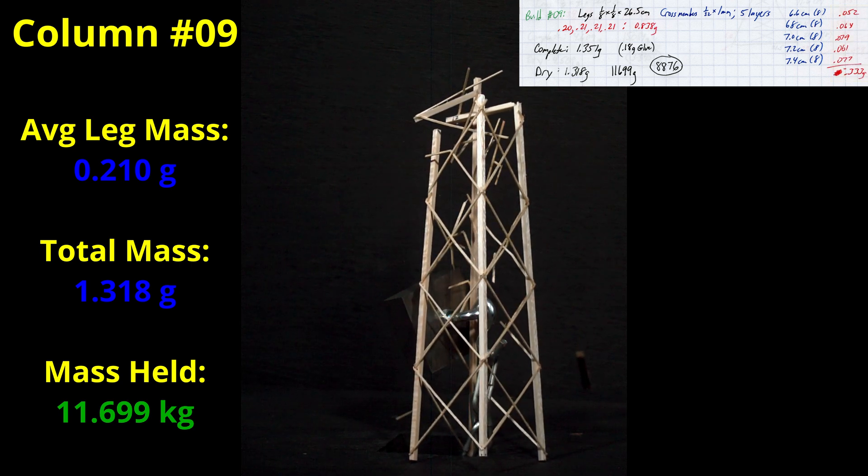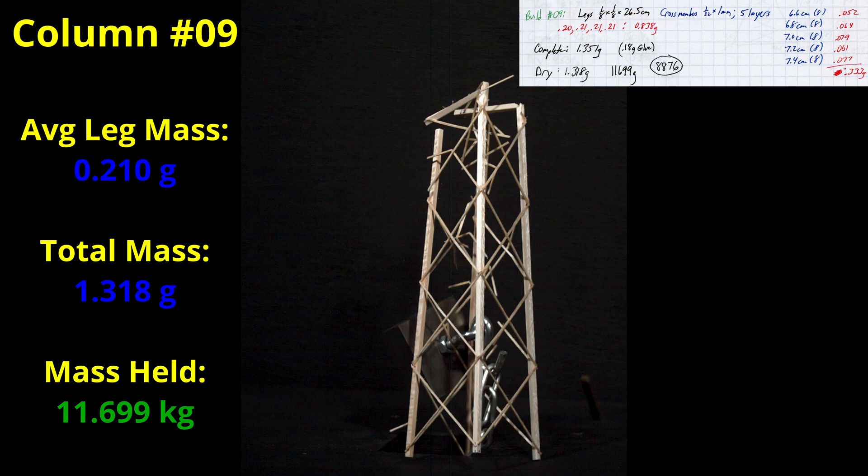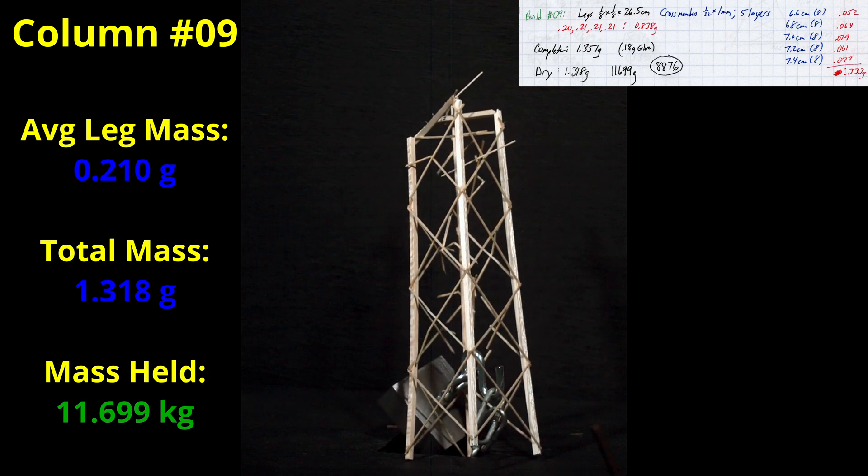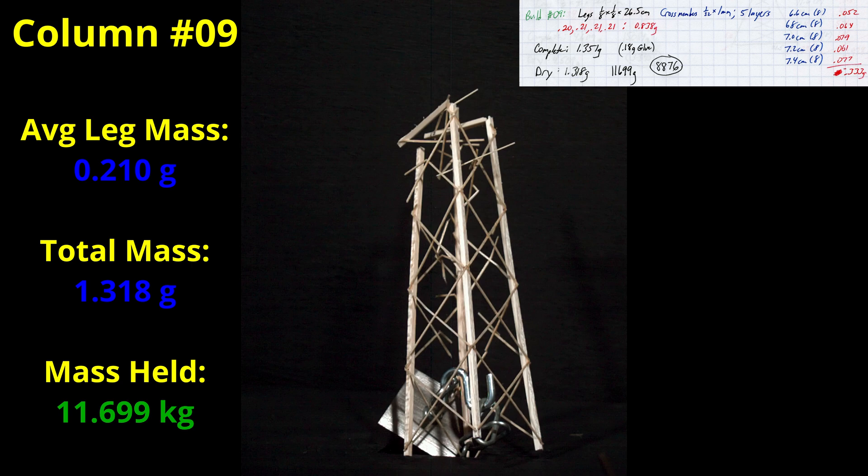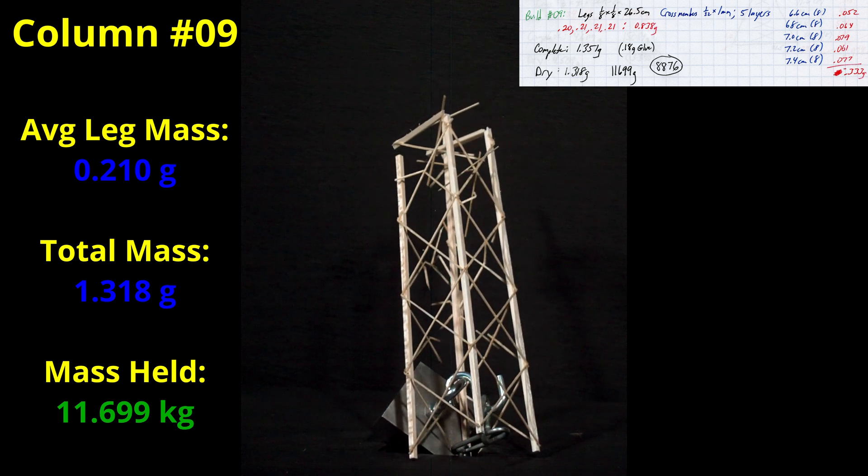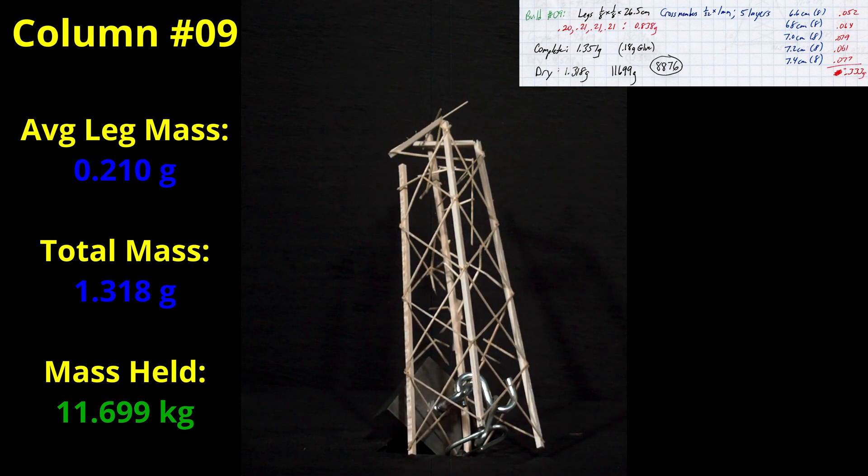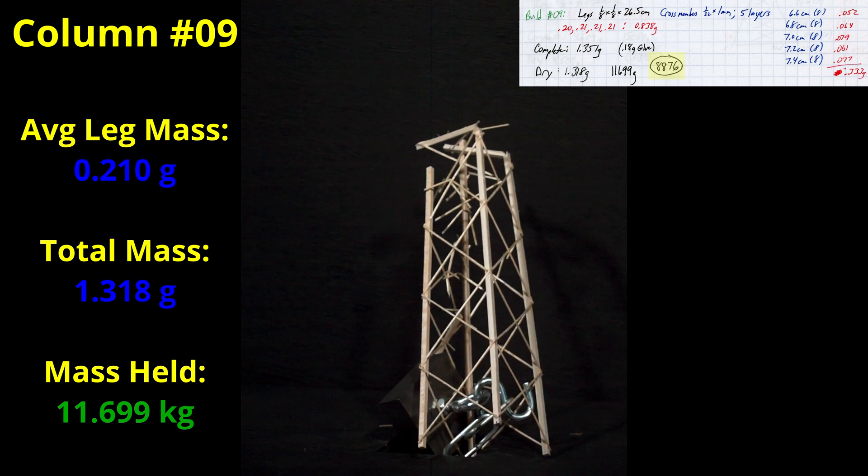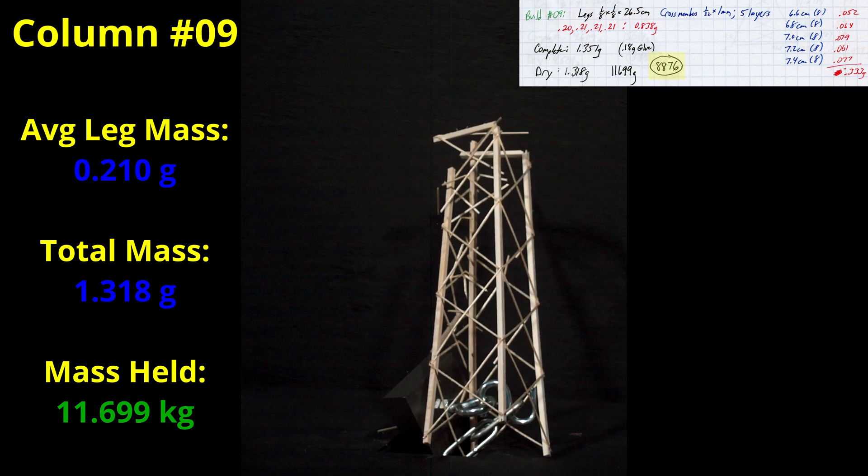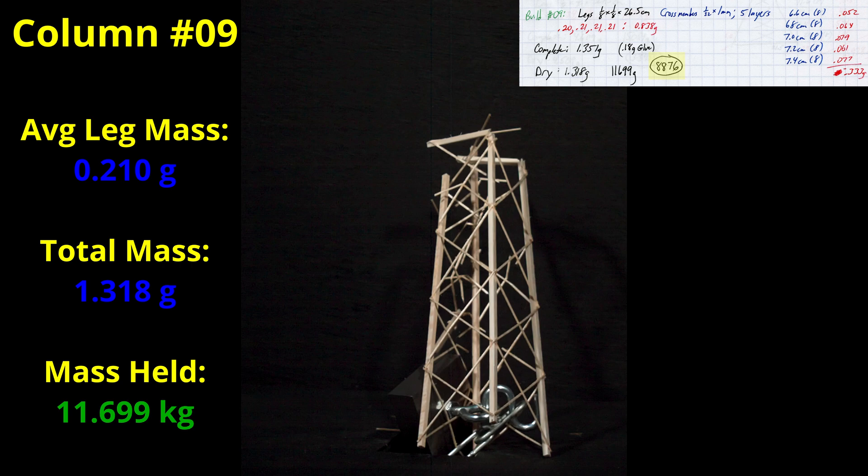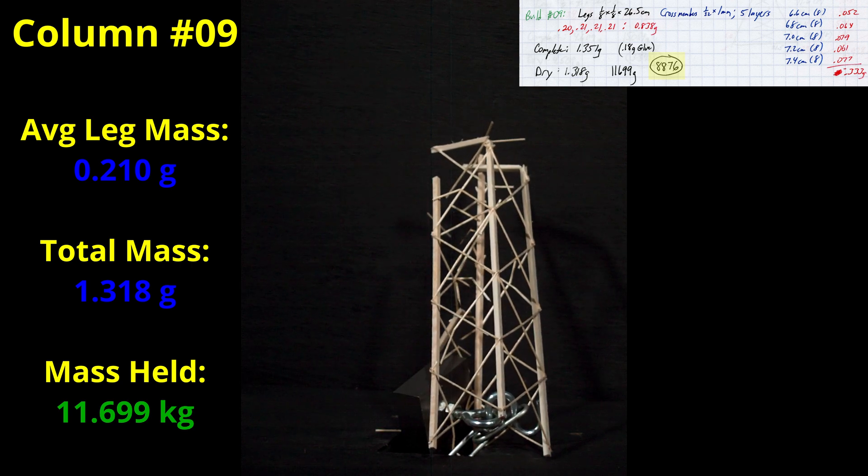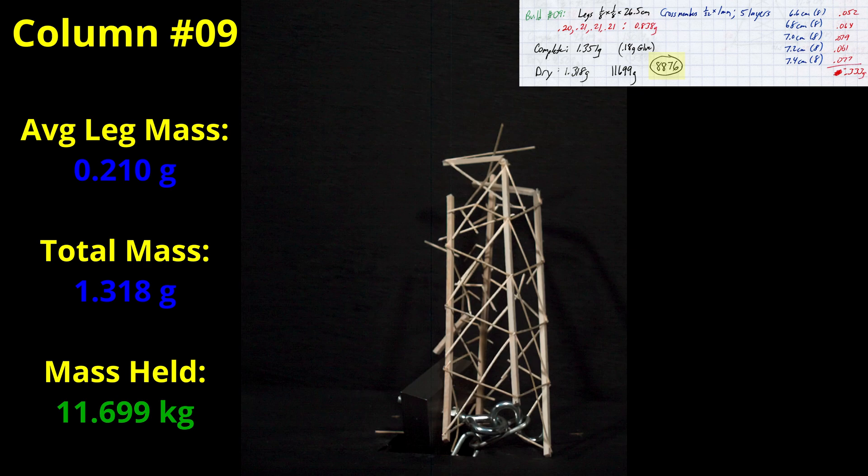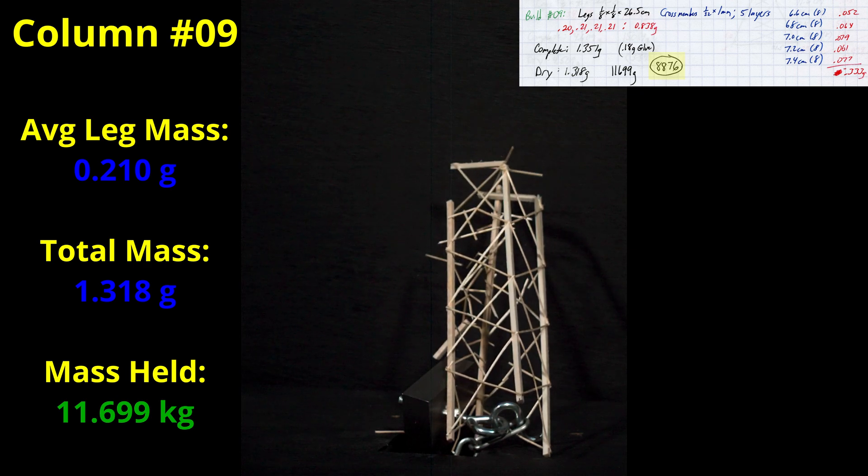The final mass of this entire column was 1.318 grams and it held 11.699 kilograms. You can see that there is still a leg failure first, but there was also much more movement in the weak cross bracing material. What is interesting about this build is while it would not be good for a bonus build, it was the highest efficiency column out of all my tests at 8,876. This might be a good benchmark efficiency and mass if you are investigating non-bonus builds.